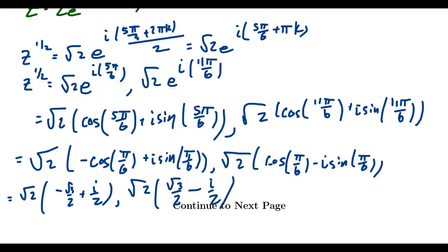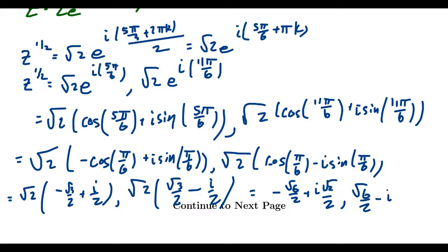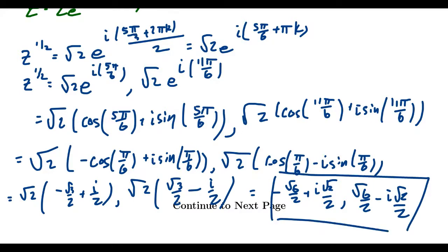Let's distribute the square root of two through. For the first square root we get negative square root of six over two plus i root two over two. The second root is its additive inverse: square root of six over two minus i root two over two. These are the two complex square roots of the number one minus i square root of three.